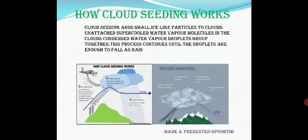Cloud seeding adds small ice-like particles to clouds. Although clouds look like they are made of gas, they are actually a large mass of tiny drops of liquid water or ice crystals. The cloud formation process usually begins when heat from the sun warms the ground. This causes the air at ground level to rise and the water vapour within it to cool. When cooled, the water vapour collides with and sticks to tiny particles floating in the air, known as condensation nuclei, containing particles such as salt and dust.